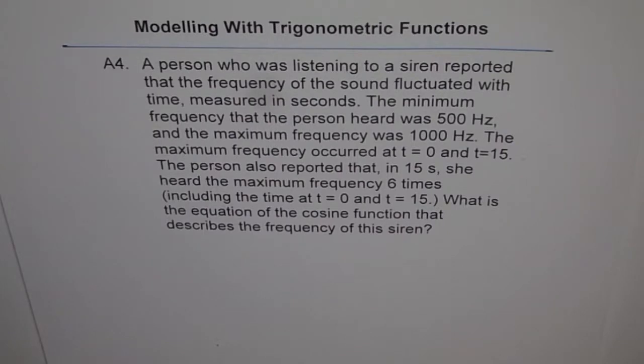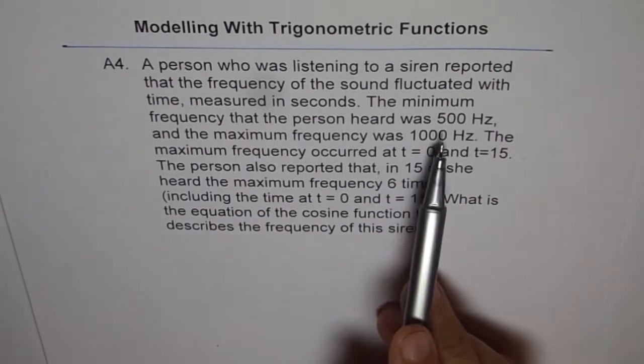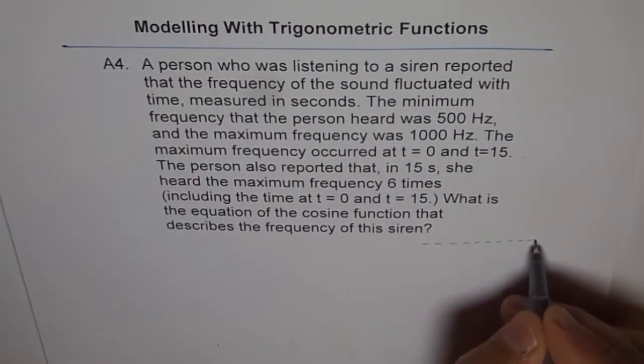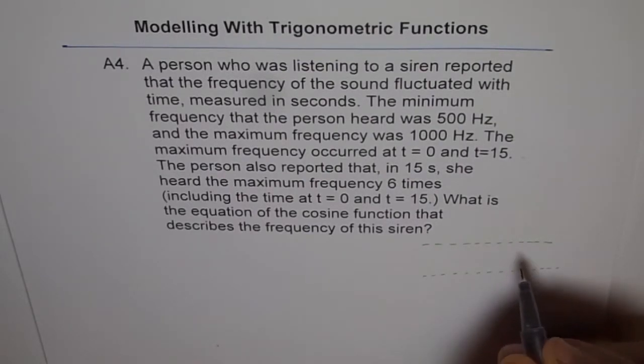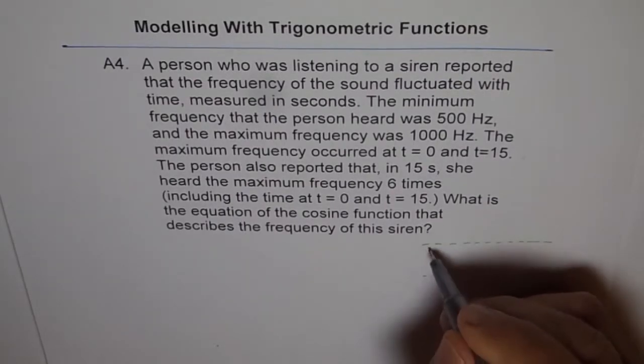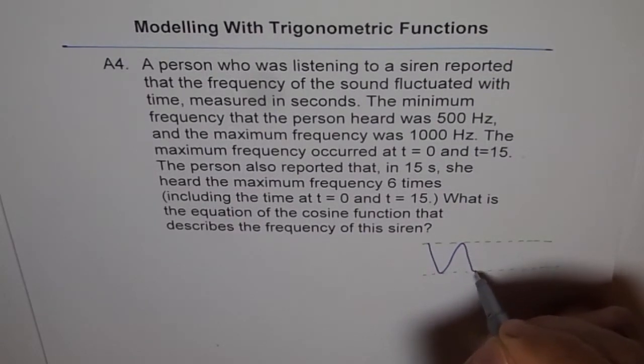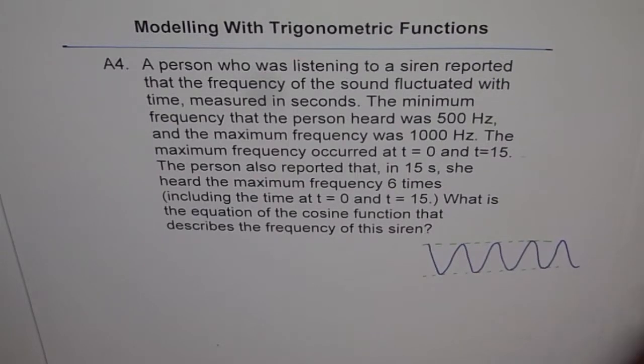Now let's try to understand the situation first. It says that the minimum frequency that a person heard is 500 and maximum is 1000. So let's draw minimum and maximum levels. Let's say this is minimum, maximum and this is minimum. We want a cosine function, so let's first draw a wave here. I have just drawn a wave.